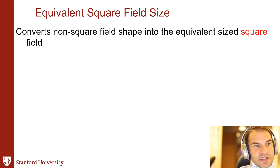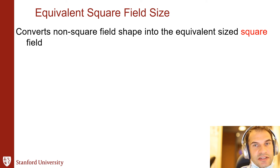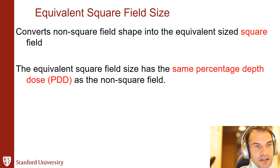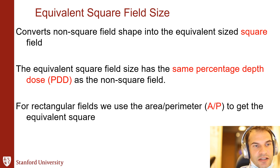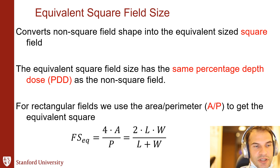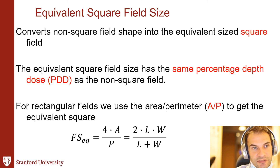Equivalent square field size is a technique we use to convert non-square field shapes into an equivalently sized square field. The equivalent square field has the same PDD curve as the non-square field. For rectangular fields there's a simple formula: 4A over P — four times the area divided by the perimeter. We can use this to convert irregular fields into equivalent square field sizes.